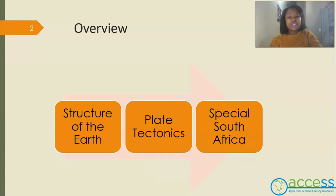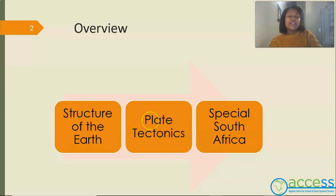We know the structure of the earth by the way in which seismic waves travel throughout the earth. This tells us that the earth is hot and melting inside. Convection within this layer causes continents to move, which is continental drift, and continental drift is the foundation of plate tectonics.